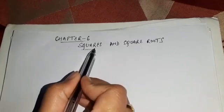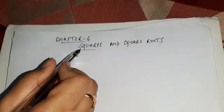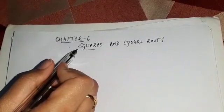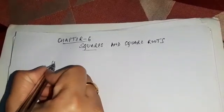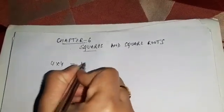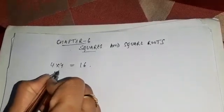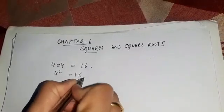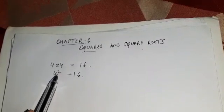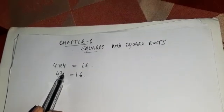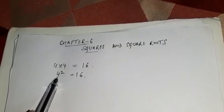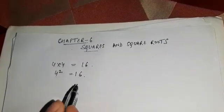So firstly let us discuss the squares. Squares means multiplication of a number by itself. For example, 4 into 4 equals to 16. That means square of 4 is equal to 16. We denote square by power 2. If we write down power 2 on any number it is called square of that number. So square of 4 is 16.